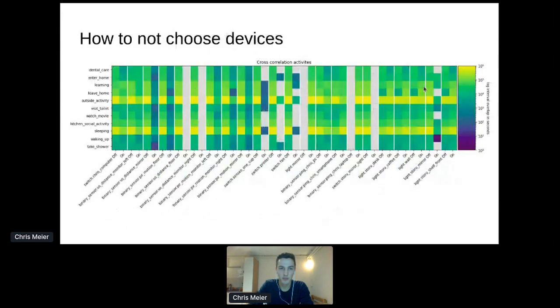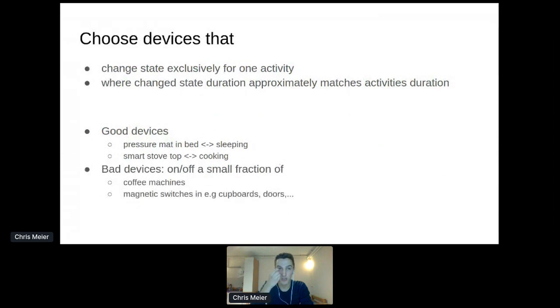Let's take a look at my data set. We can see it is pretty bad because they all have the same color here. All these devices are worthless - some sensors weren't even on for a particular time. And all these sensors that may seem interesting suffer this property that they have no mutual information. So we should choose devices that change state exclusively for one activity, and we should also choose devices where the change state duration approximately matches the activities duration.